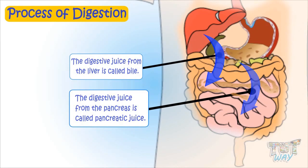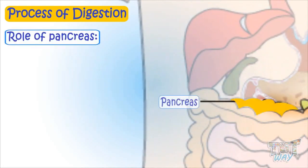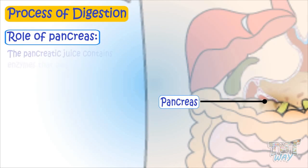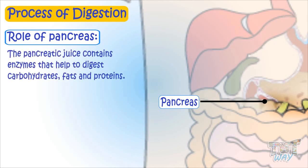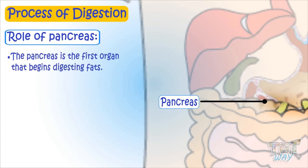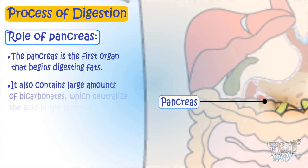The pancreas is a leaf-shaped organ that lies below the stomach. The pancreatic juice contains enzymes that help to digest carbohydrates, fats, and proteins. The pancreas is the first organ that starts digesting fats. It also contains bicarbonate, which neutralizes the acid from the stomach.